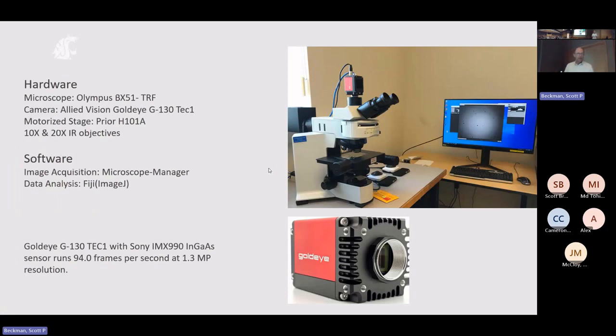So the microscope is an Olympus BX-51. We recently, thank you John, have a new microscope body so we can have transmission illumination which allows us to do filtering of different wavelengths. So it's a big improvement. We have a camera that we acquired a couple years ago that can see out to 1.7 microns, so it gets a little bit out of the infrared. Motorized stage to do scanning X, Y, and Z. Then we have infrared corrected objective lenses for 10X and 20X, so it gets much better light throughput.